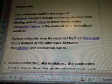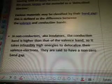Various metals may be classified by their band gap. This is defined as the difference between the valence and conduction bands. In non-conductors, aka insulators, the conduction band is higher than that of the valence band, and so it takes infeasibly higher energies to delocalize their valence electrons.